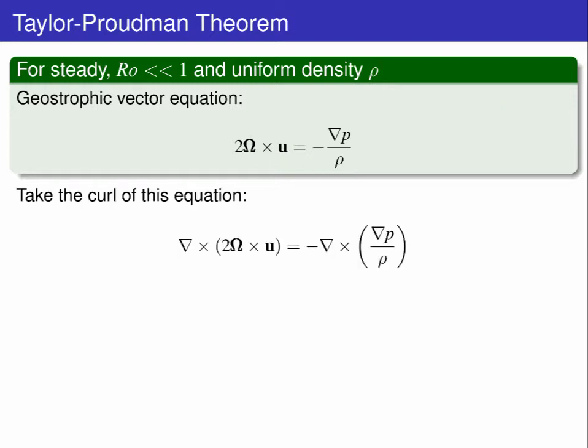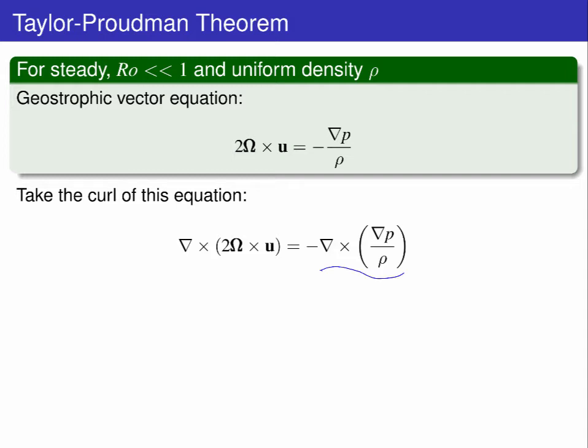The first thing to note is on the right-hand side, the curl of a gradient is 0, and rho is uniform, so we are left with the curl of omega cross u equals 0.